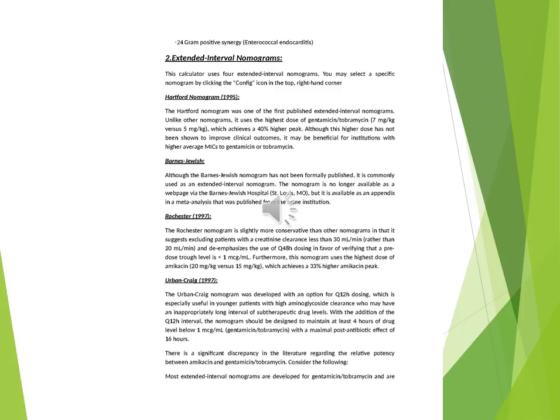Rochester nomogram (1997): the Rochester nomogram is slightly more conservative than other nomograms in that it suggests excluding patients with a creatinine clearance less than 30 mL/min rather than 20 mL/min, and deemphasizes the use of Q48h dosing in favor of verifying that a pre-dose trough level is less than 1 mcg/mL. Furthermore, this nomogram uses the highest dose of amikacin at 20 mg/kg versus 15 mg/kg, achieving a 33 percent higher amikacin peak.